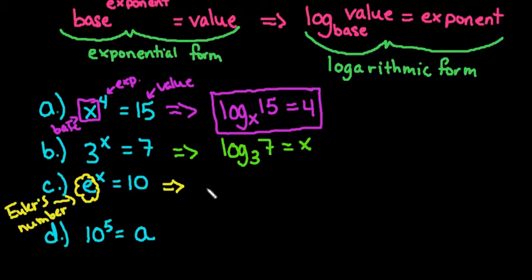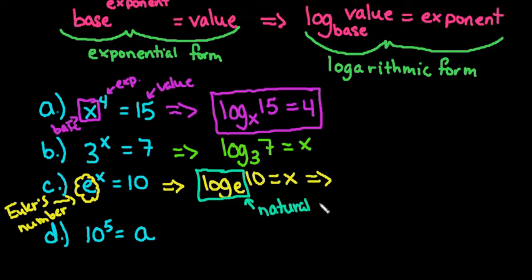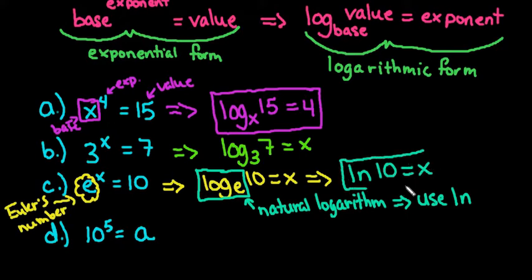all we would do is we can write it in this form, log base e of the value equals x. But because it is used so often, this one has its own special function and its own value in the calculator. This is known as the natural logarithm. And for natural logarithm, we always use ln. So any time you see log base e, you would always write this as natural log 10 equals x. And the base is understood to be e. So ln just means log base e.